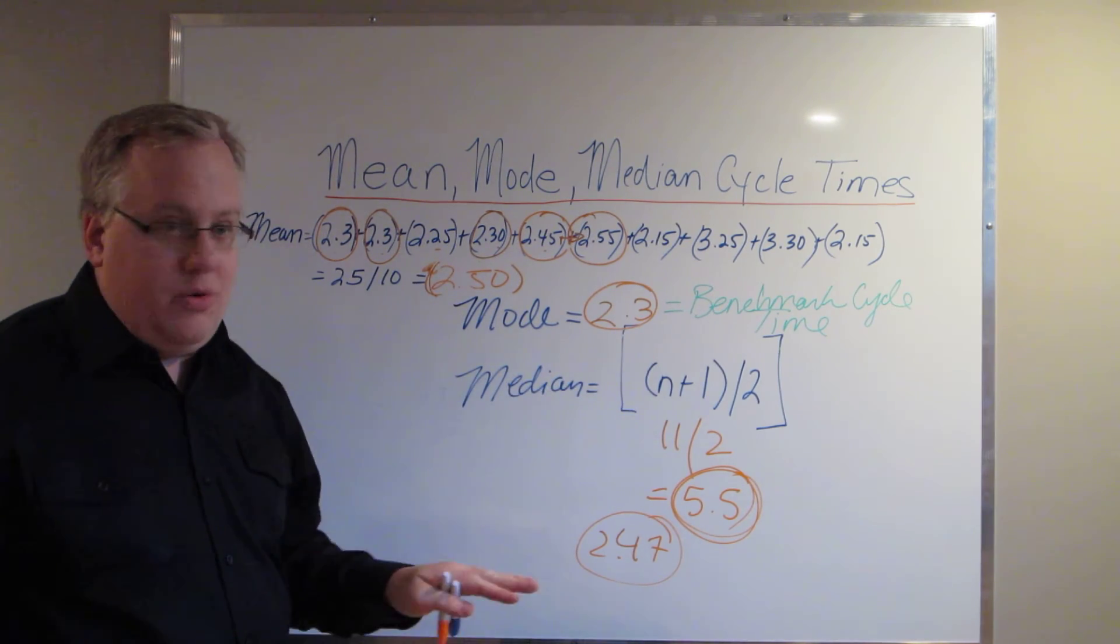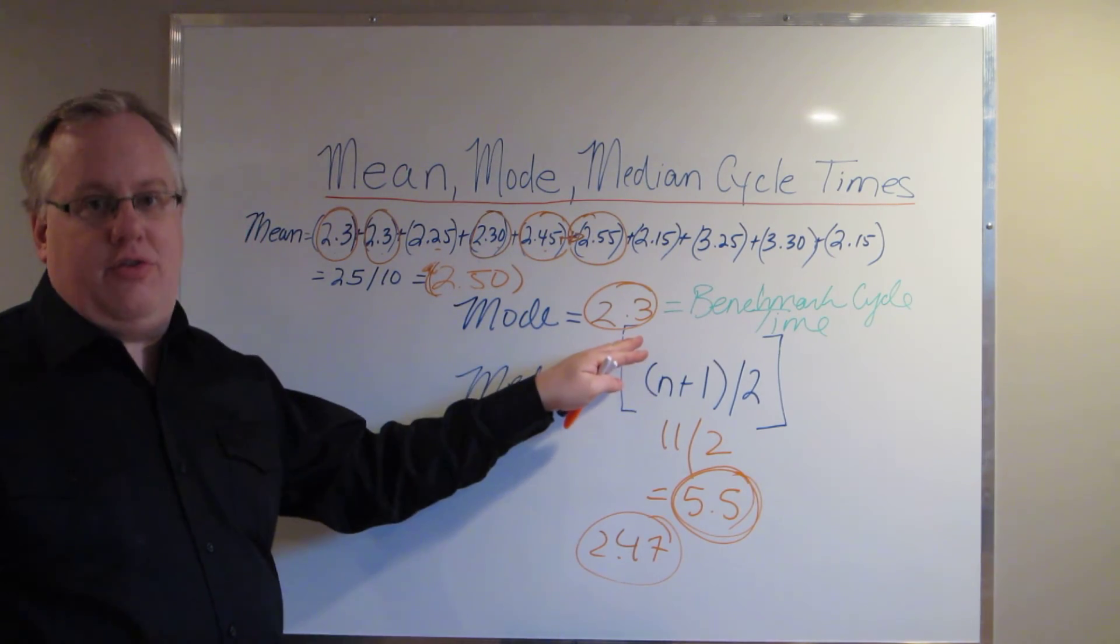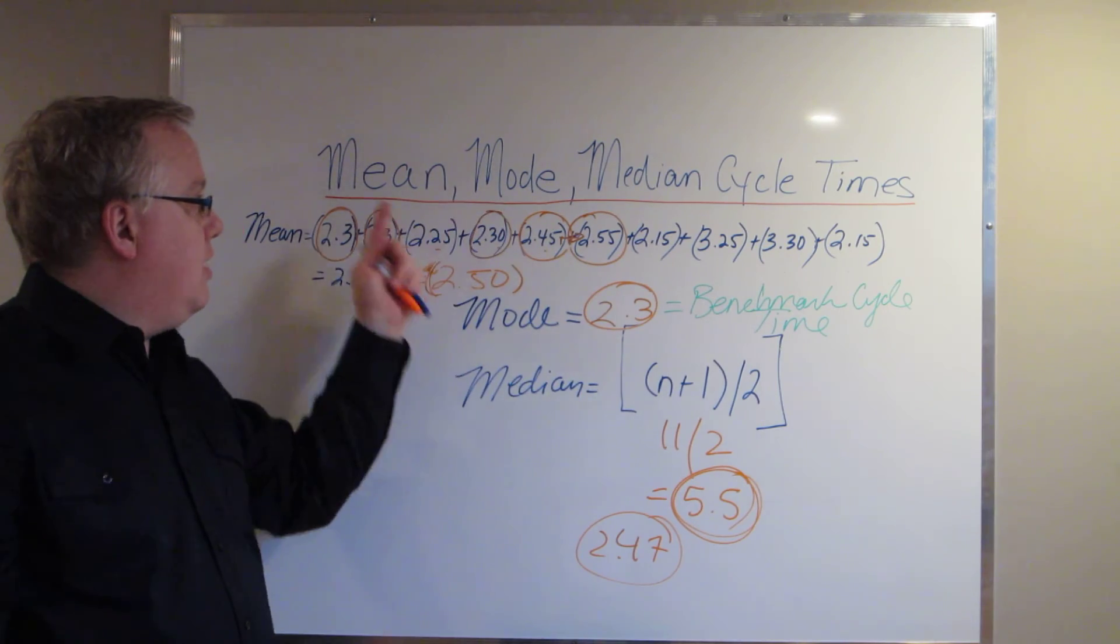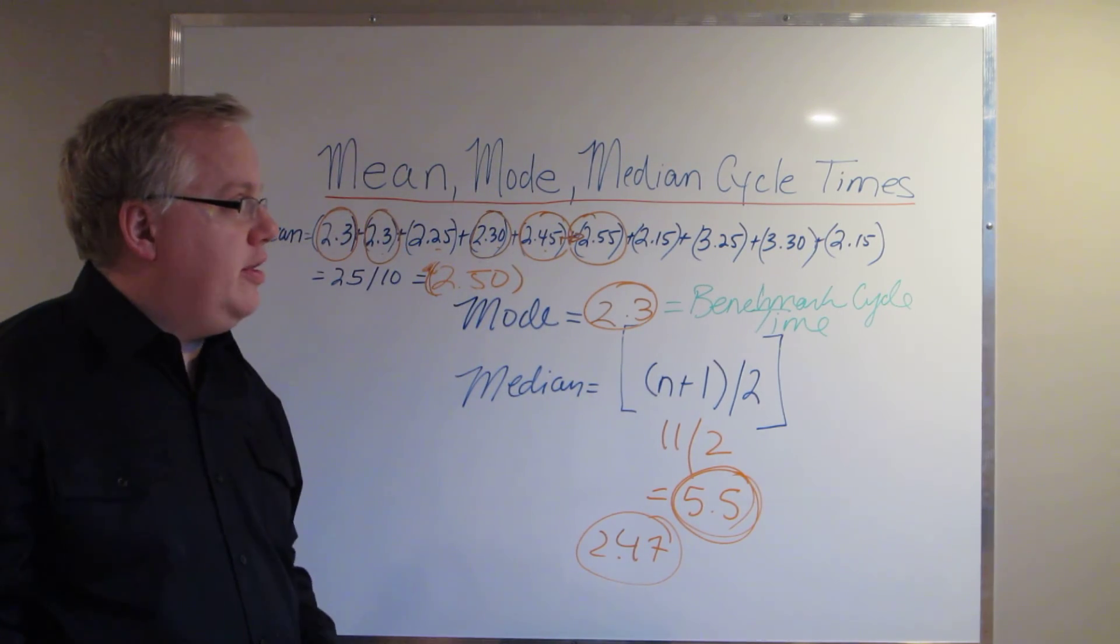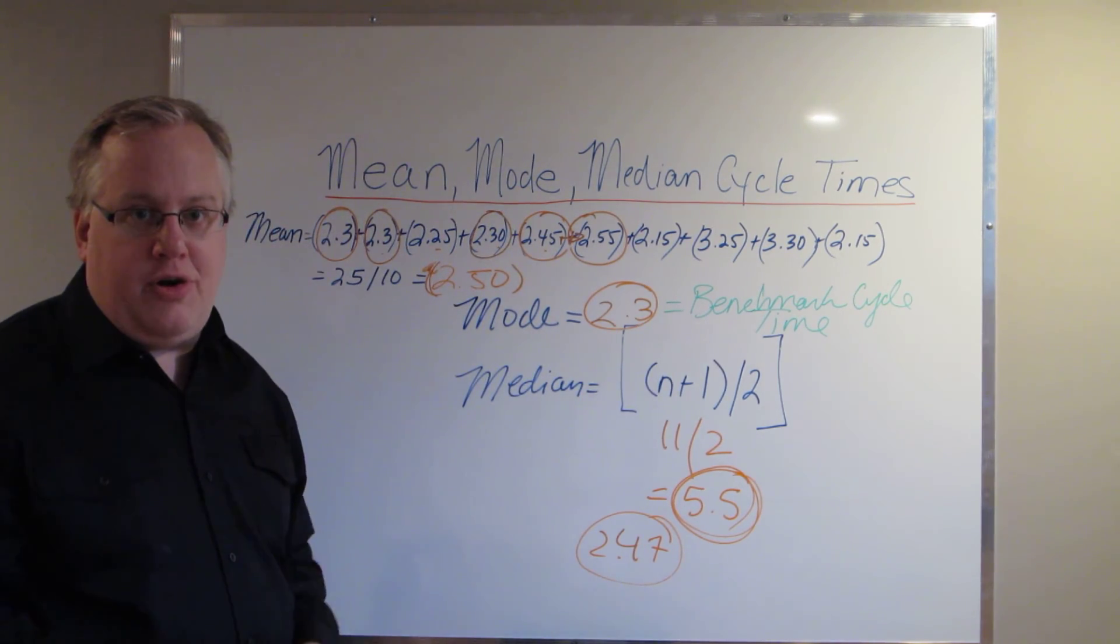Now if that's all you do, then you will increase your production throughput. So that's it. That's the difference between mean, mode, and median cycle times. If you want to check out more, go to driveyoursuccess.com. Thank you very much.